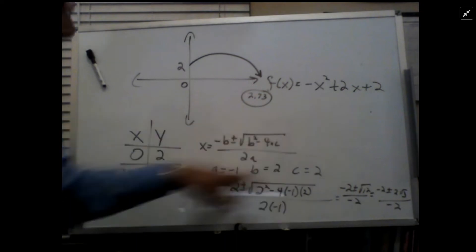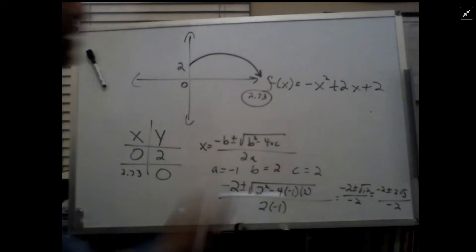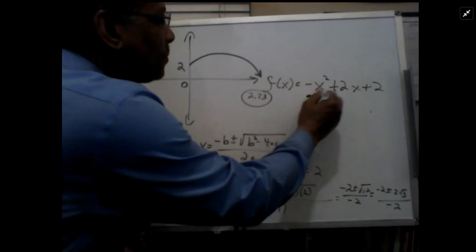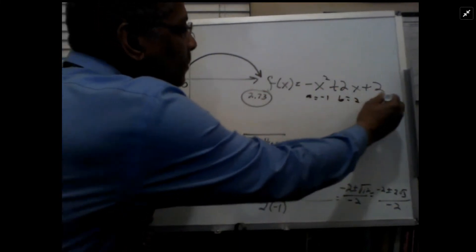Your a is negative 1, your b is positive 2, and c is positive 2. That's where it came from.